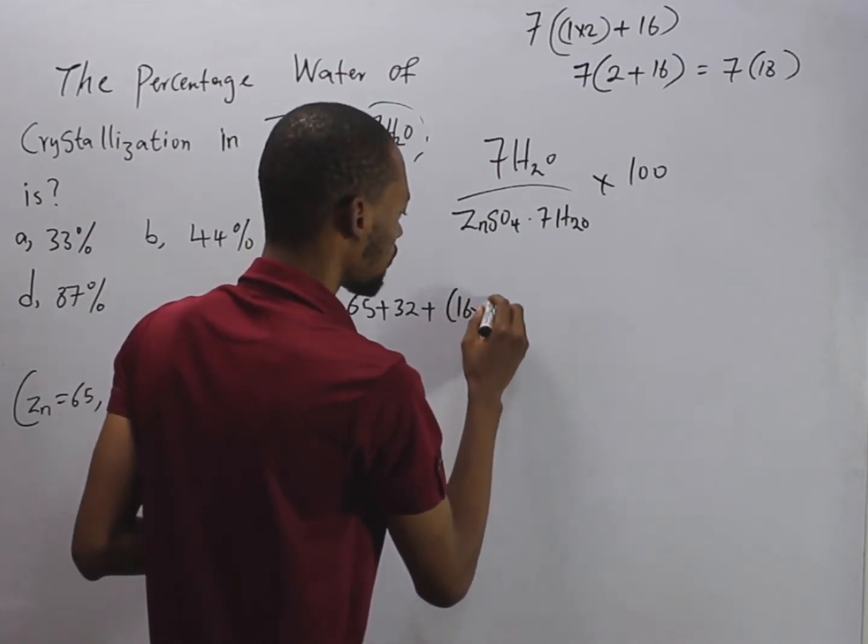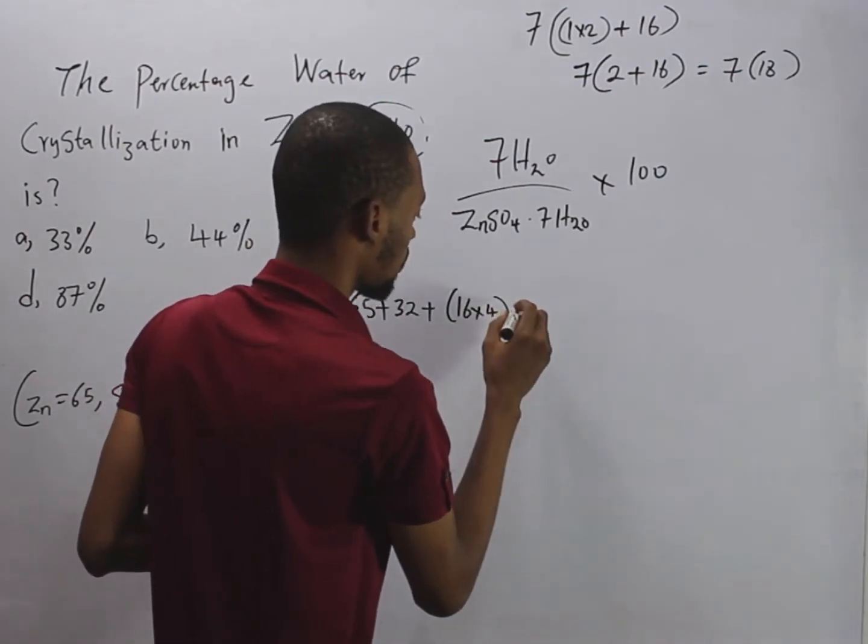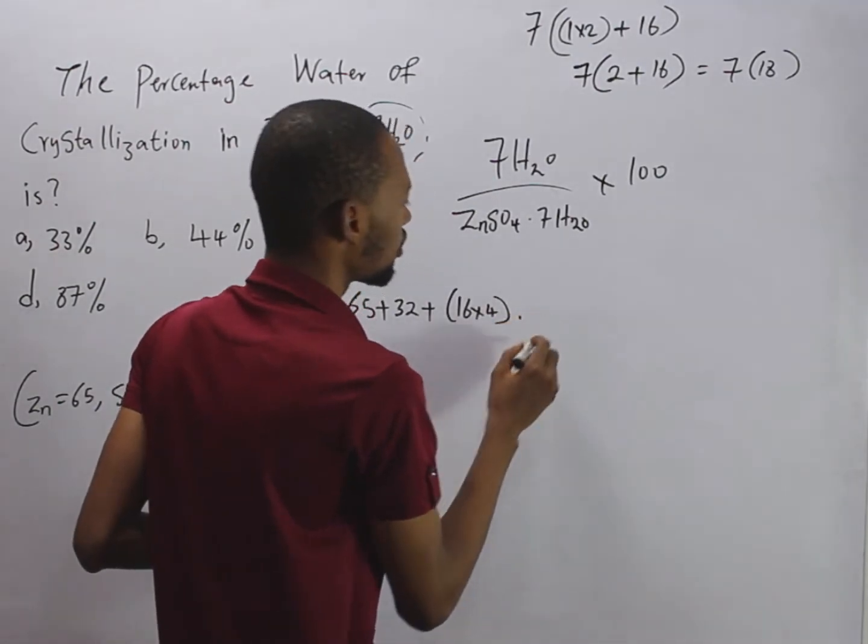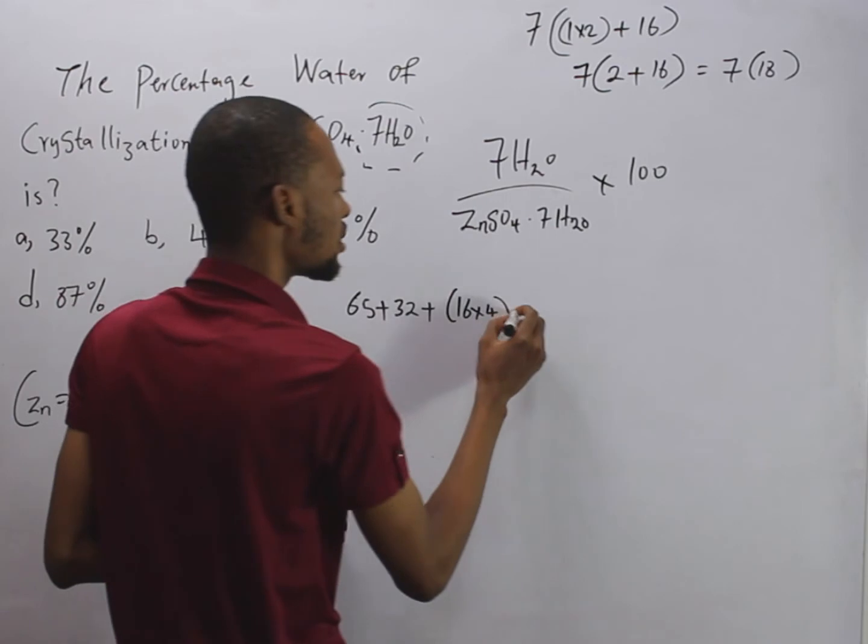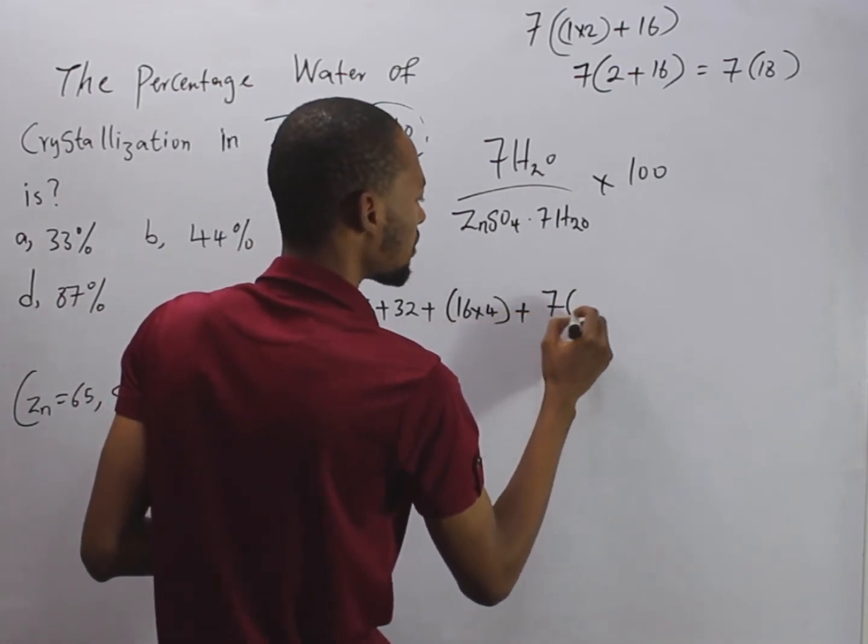So 16 times 4—since we've already calculated the mass of 7H₂O, we simply add it: plus 7 times 18.